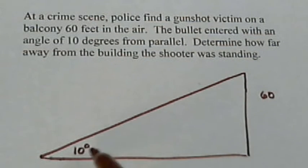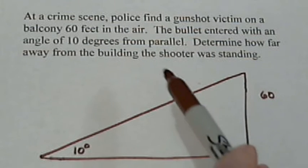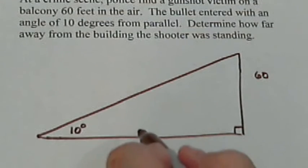And so we've got the angle, we've got the building. We're going to assume the building was built nice and straight so that'd be a 90 degree angle. And it says we want to determine how far away from the building the shooter was standing. So this is the distance we're trying to find.